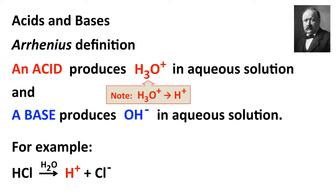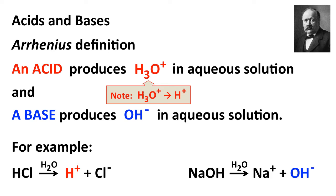Here's the shorthand way of writing it: HCl dissolves in water to make H+ and Cl-. The H+ that's produced immediately combines with H2O to make H3O+, so that's more correct, but H+ is sometimes used as a shortcut. NaOH is a solid; when it dissolves in water, it produces sodium ion along with hydroxide ion. And producing the hydroxide ion is what makes NaOH an Arrhenius base.